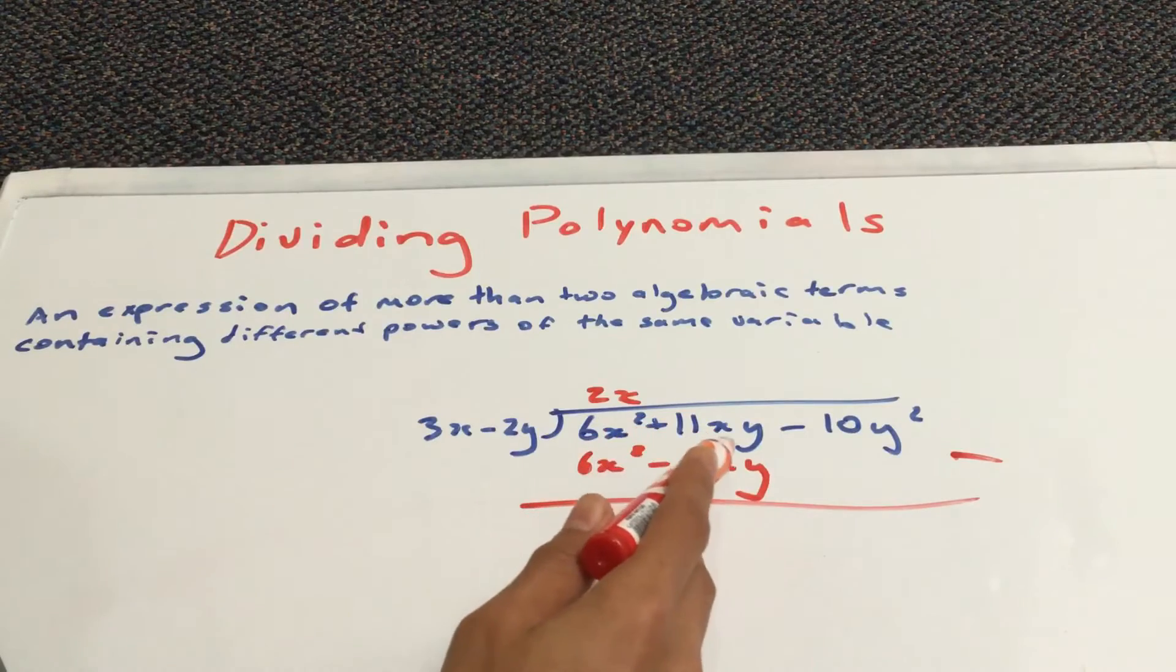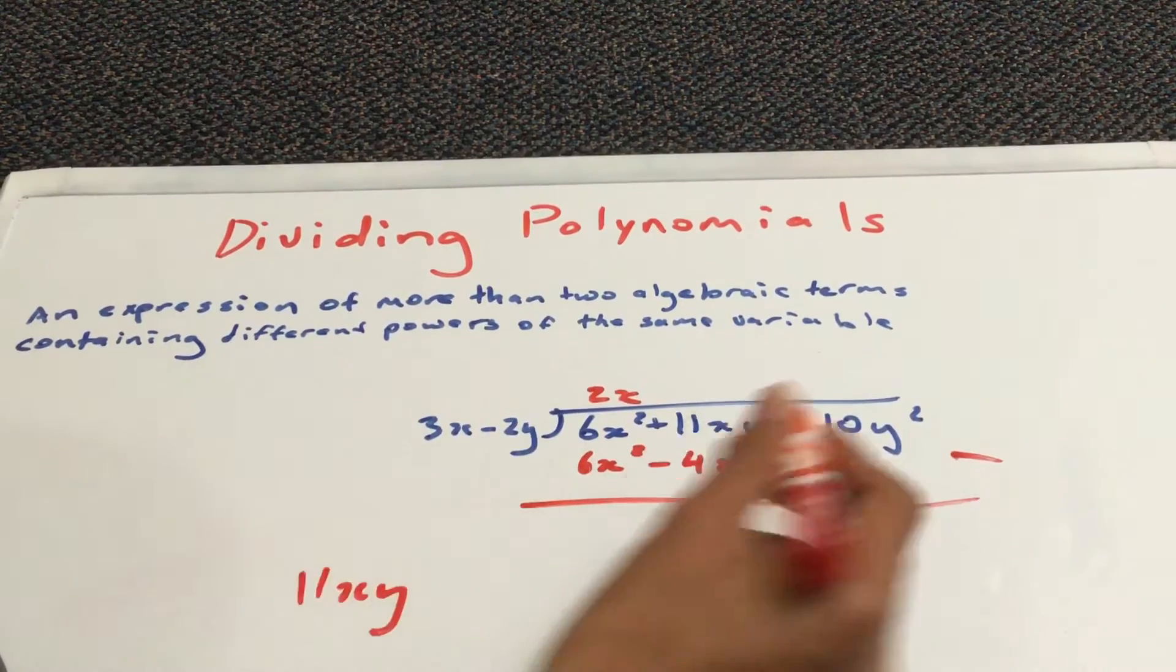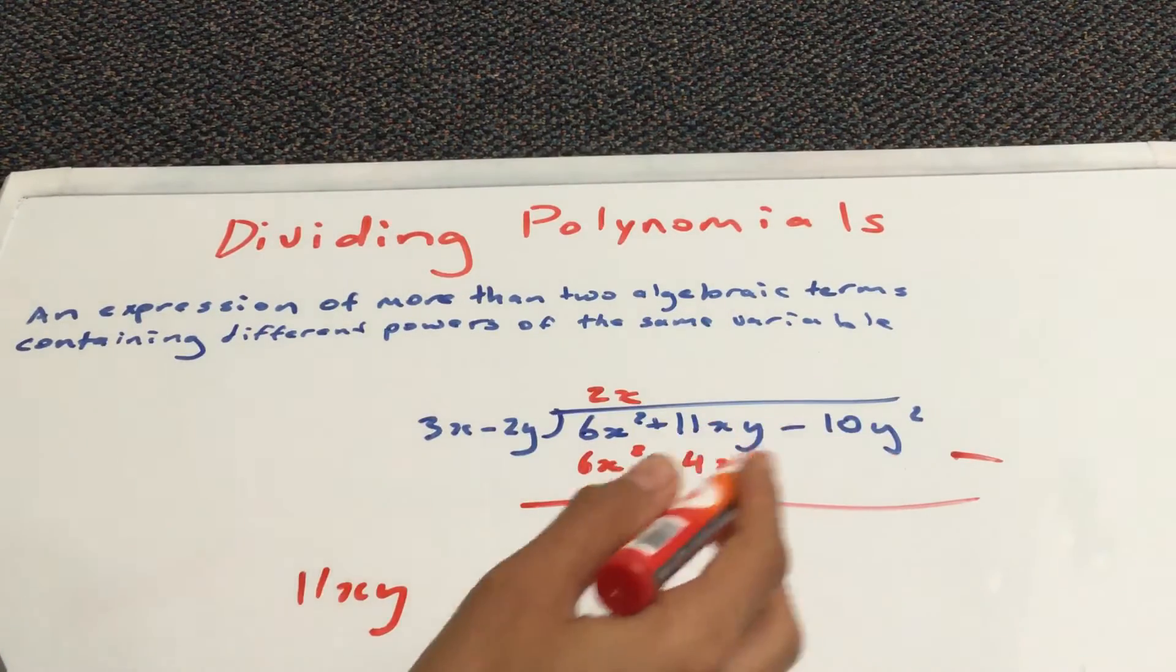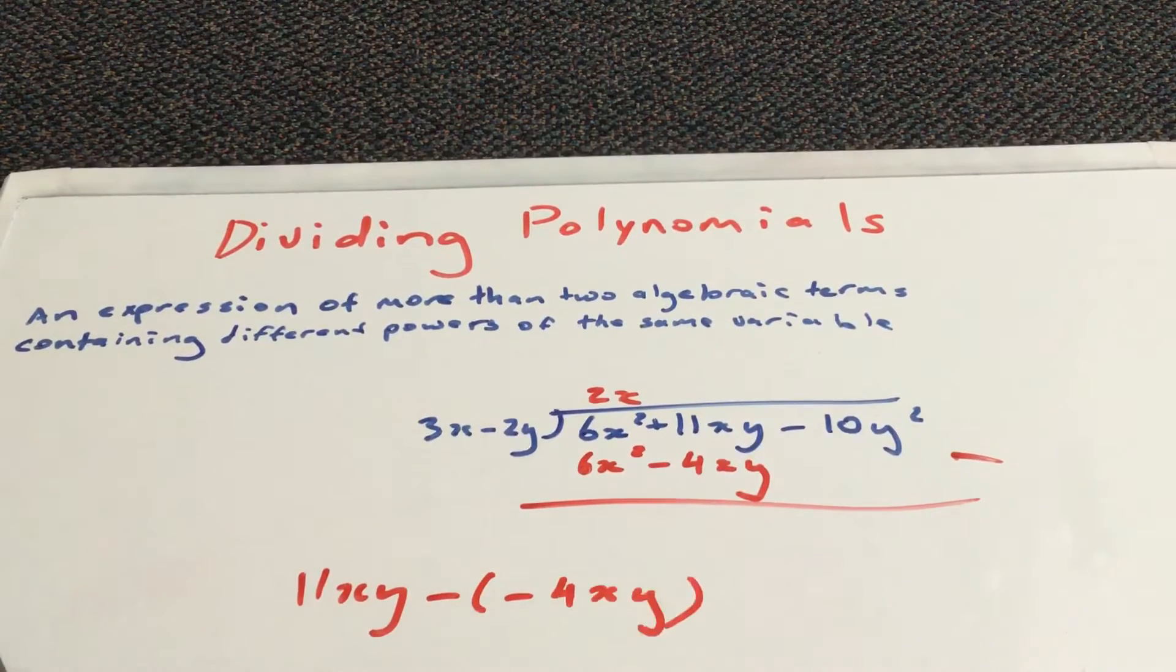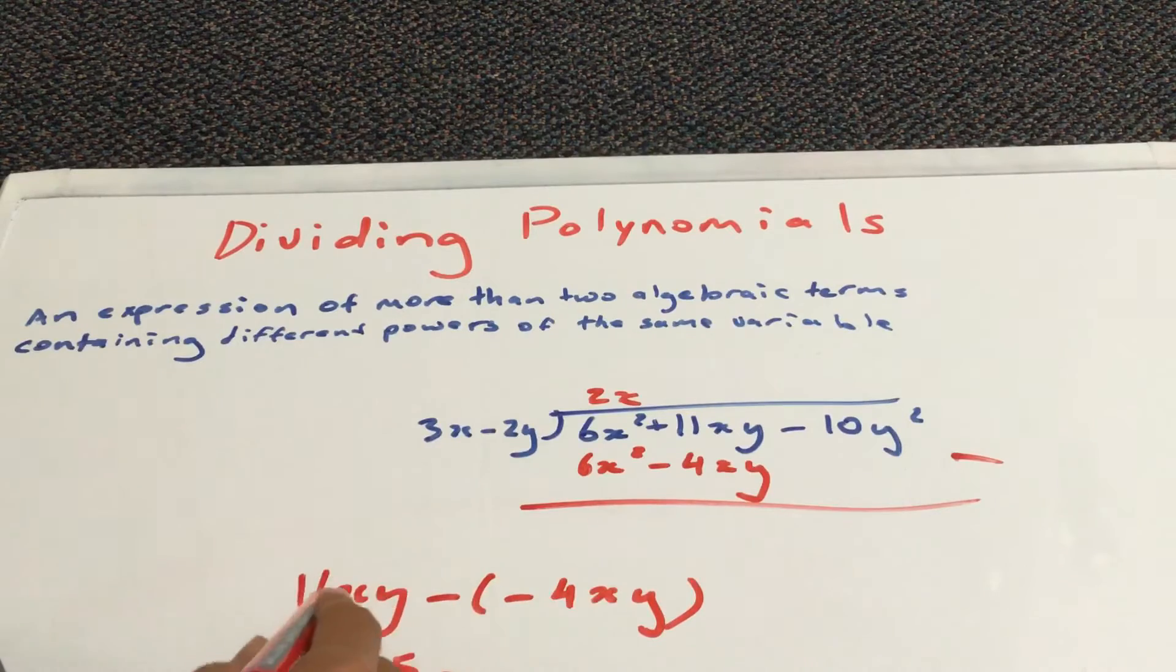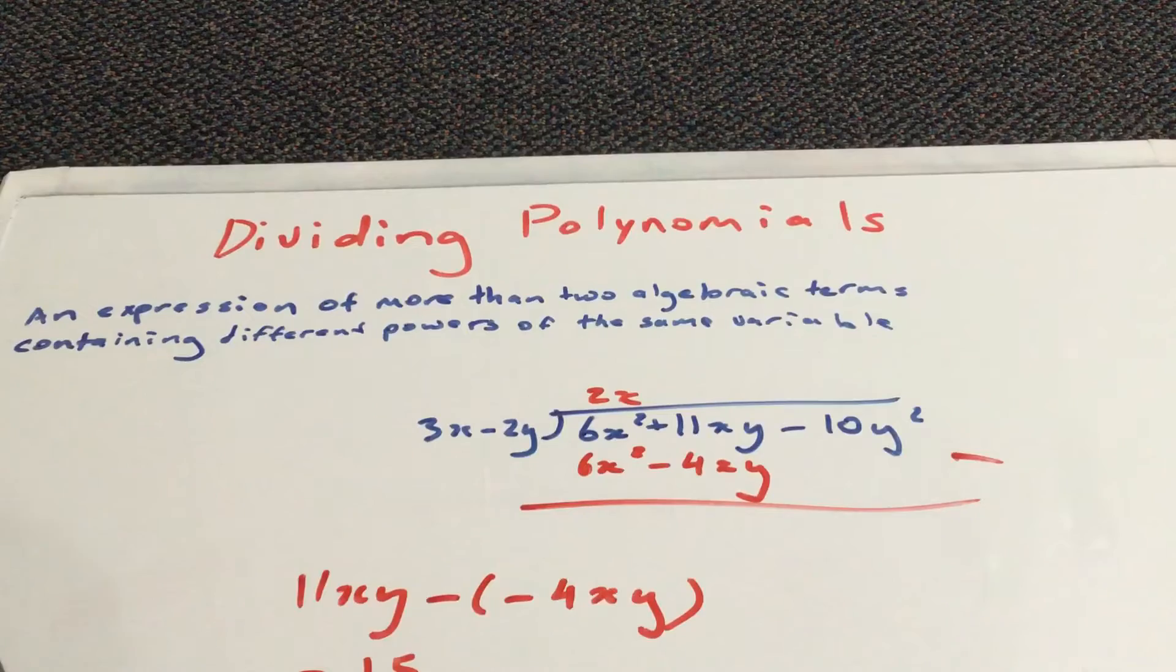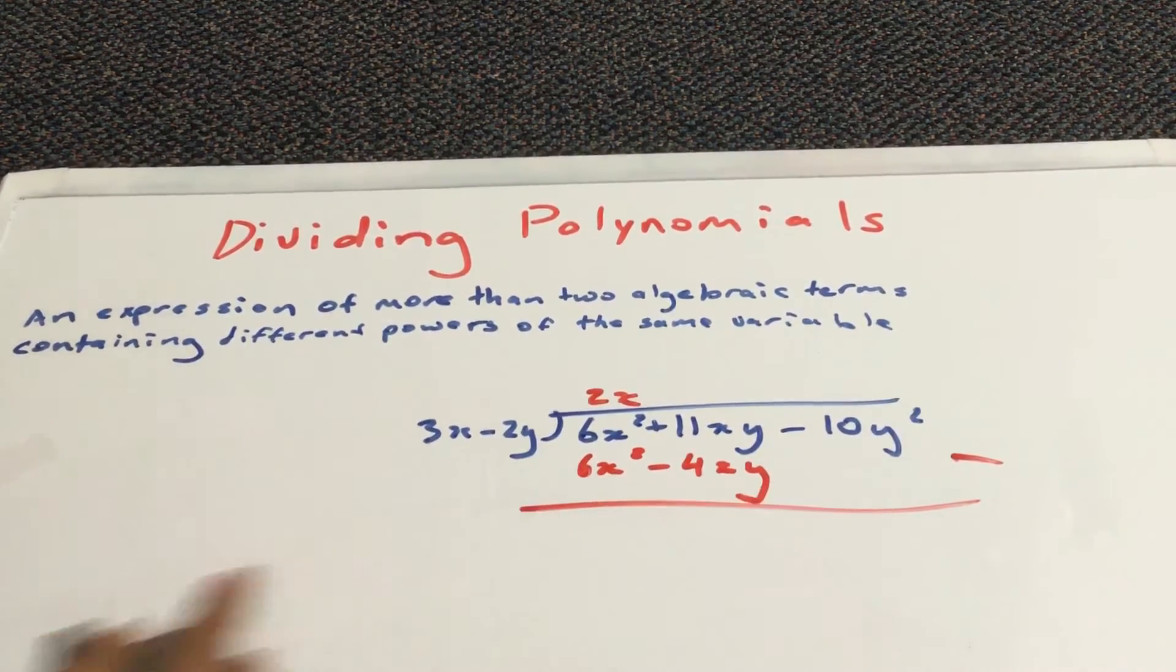And now, 11xy minus 4xy. But, when you write this over here, you need to watch out for the negative sign. So, you get a positive. So, it would result in 15xy. Make sure not to multiply x and x and y and y. Because, in this case, the algebraic term is being added. So, you don't multiply. So, it's 15xy.